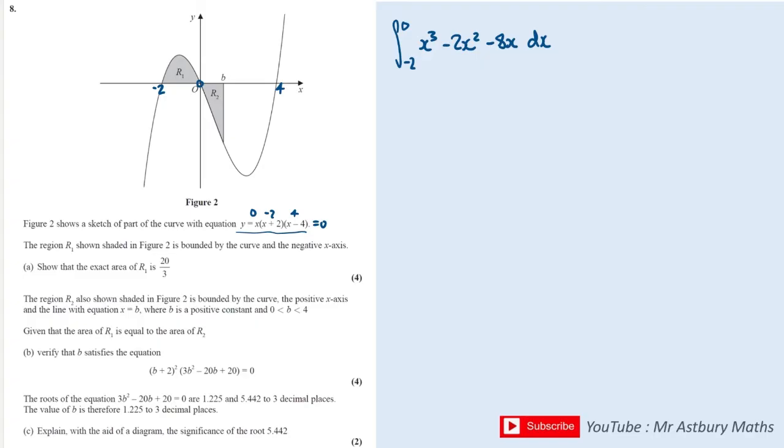When we expand those brackets, then we integrate that. We up the power and divide by the new power. Up the power to 3 and divide by the new power. Up the power to 2, divide by the new power gives us 4. And we're subbing in 0 and minus 2.